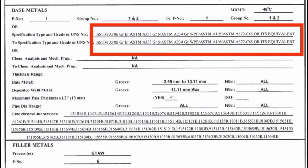A234 Grade WPB is also P-1. We use ASTM A106 Grade B and A234 Grade WPB — that is why we use the type marked in the red box. So now we will verify: first, P No. 1, Group No. 1 and 2. Group No. 1 is a subsection of P No. 1.